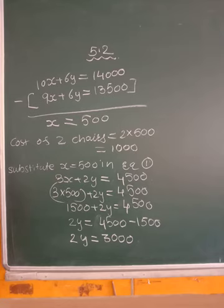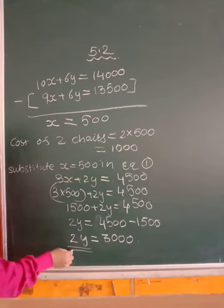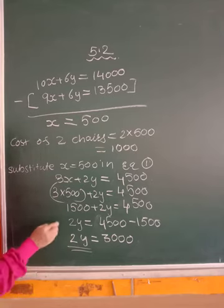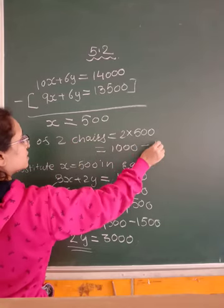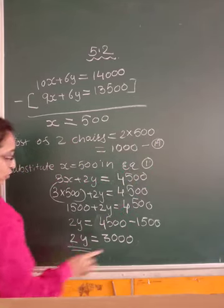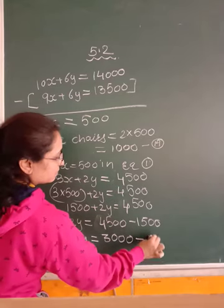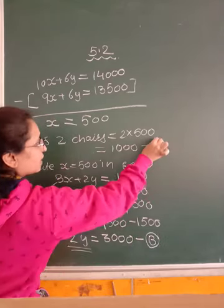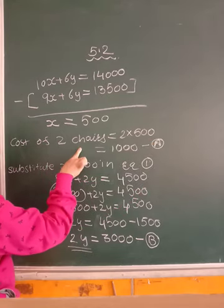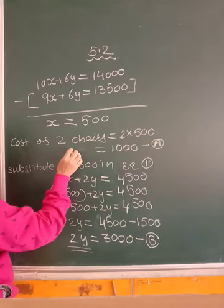What is the cost of 2 chairs? This is, say for example, A. And cost of 2 tables is 2y, we got B. Why I am not finding y? Because I want value of 2y plus 2x. 2 chairs means this is 2x.